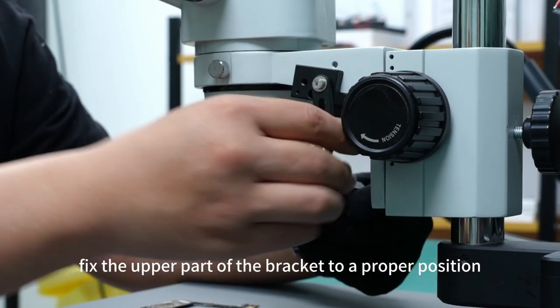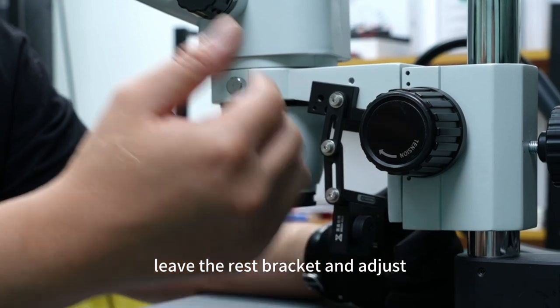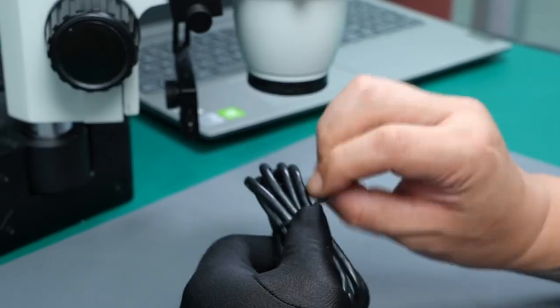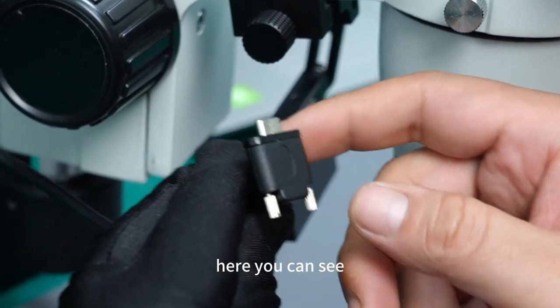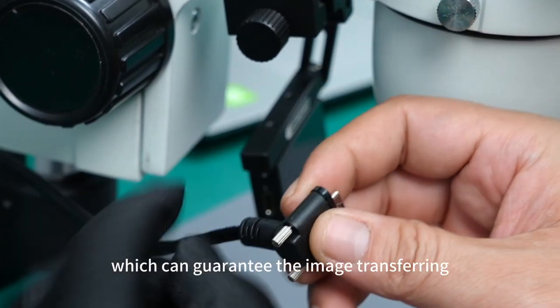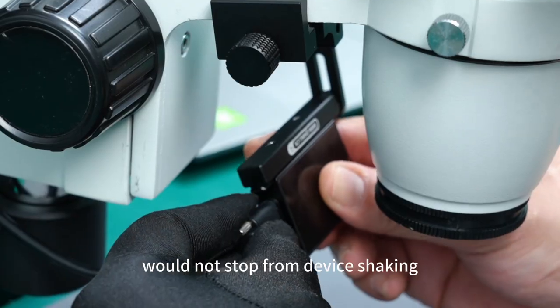Fix the upper part of the bracket to a proper position. Leave the rest of the bracket and adjust after we see the image. Find the data cable in the package. Here you can see the Type-C port comes with two screw locks, which guarantee the image transferring will not stop from device shaking.